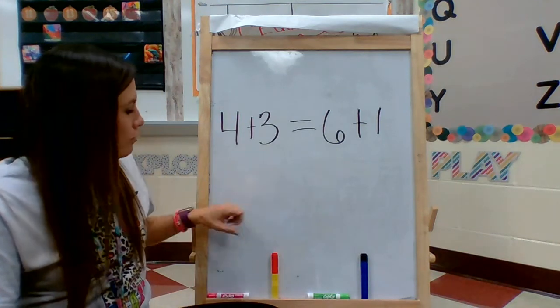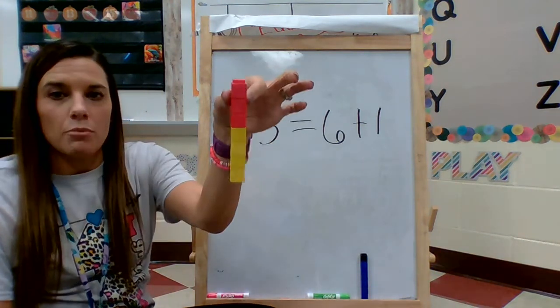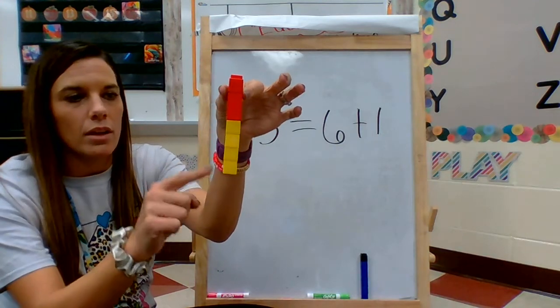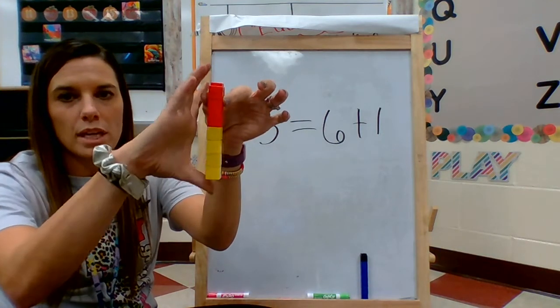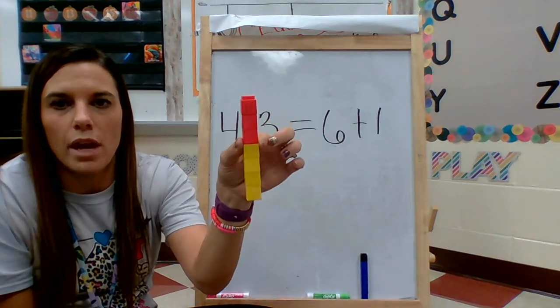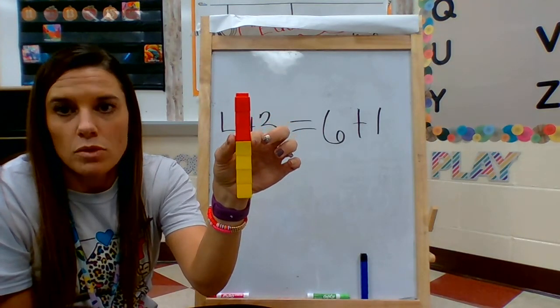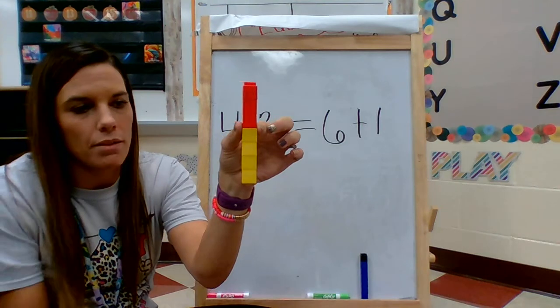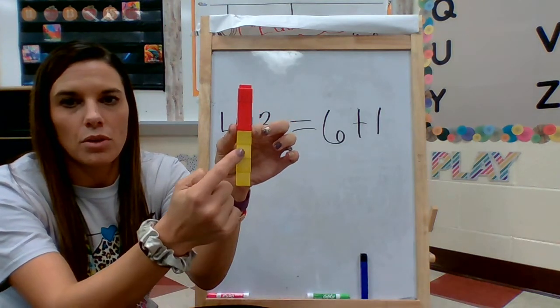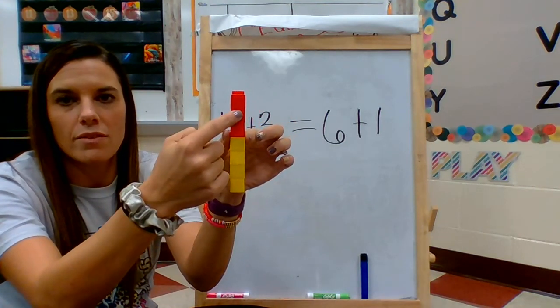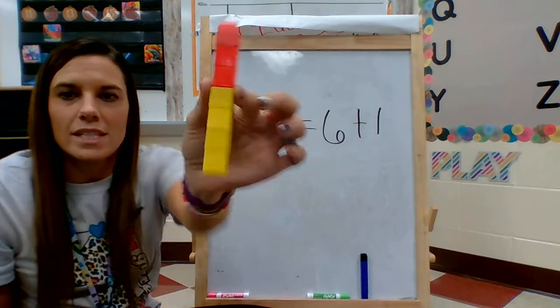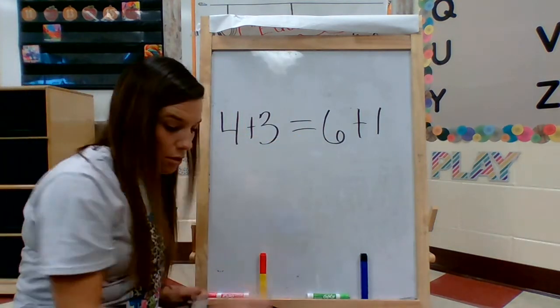4 plus 3, I built it like this. I have 4 yellow cubes and 3 red cubes. Let's count and see how many I have all together. 1, 2, 3, 4, 5, 6, 7. I have 7 cubes all together in my tower.